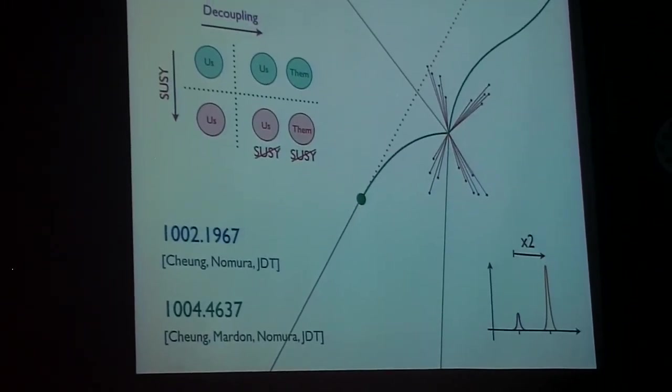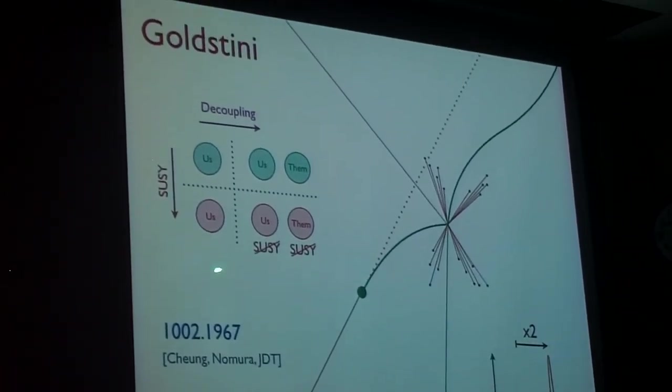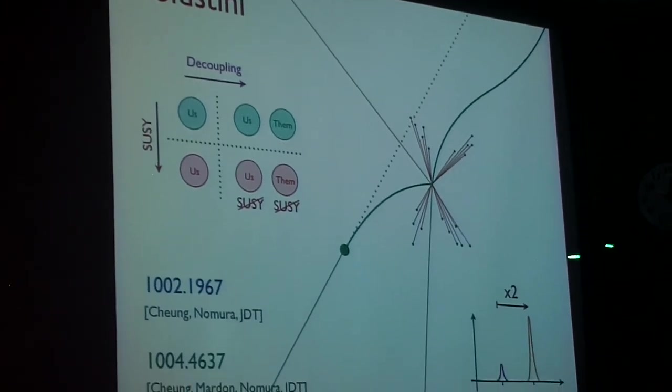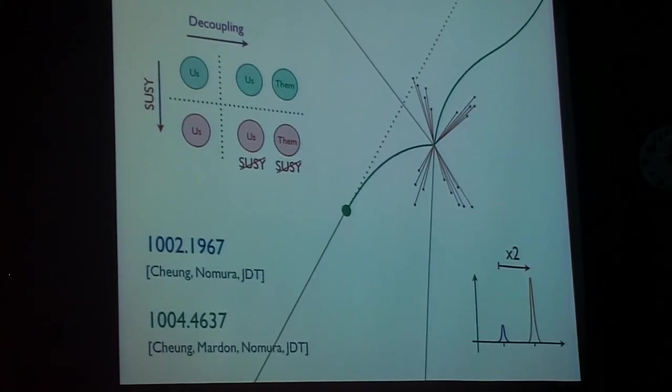This is flights of fancy of the mind. What could happen if you break supersymmetry multiple times? We get a surprise. We get a fairly robust prediction for masses that can be tested at the LHC.